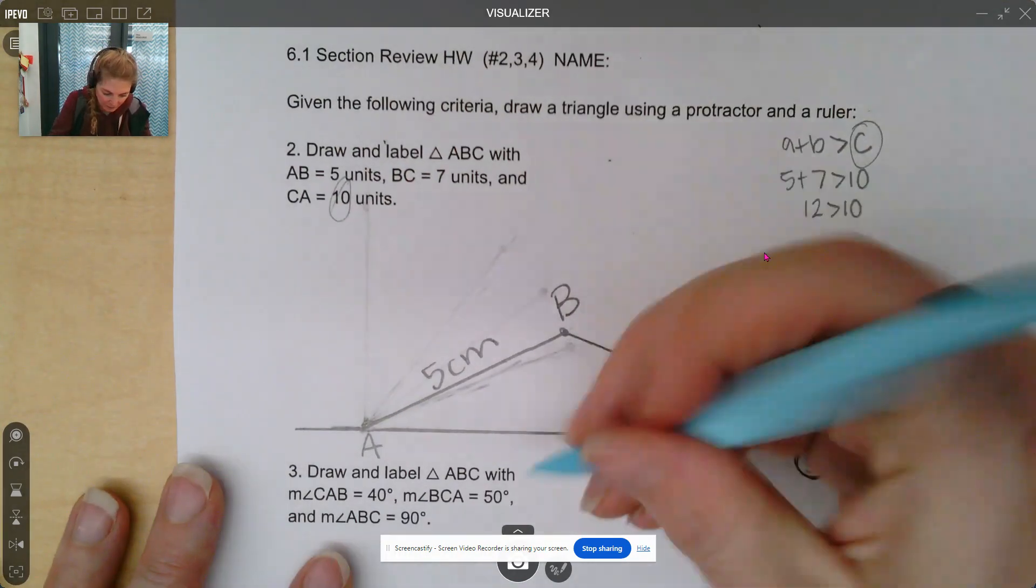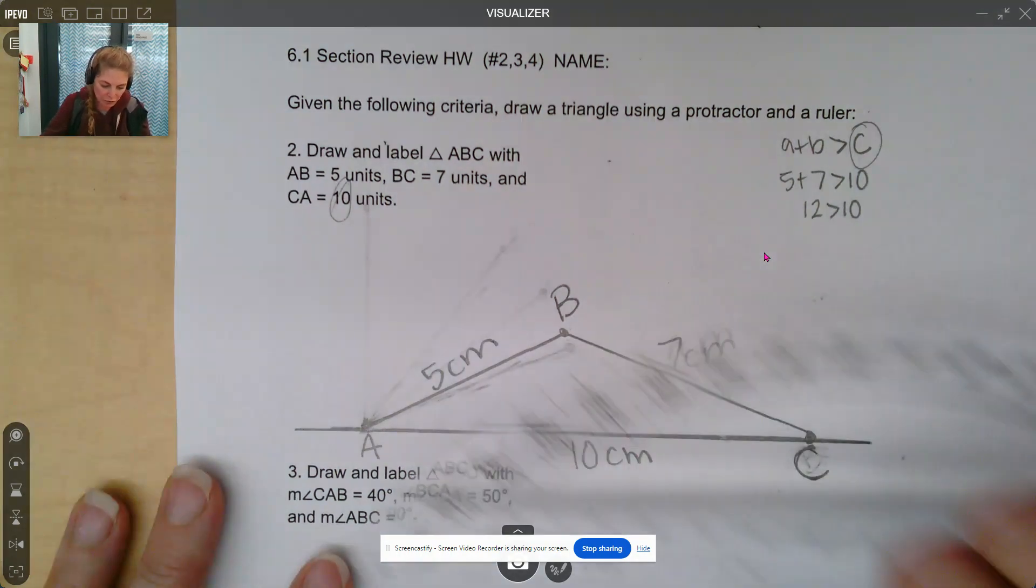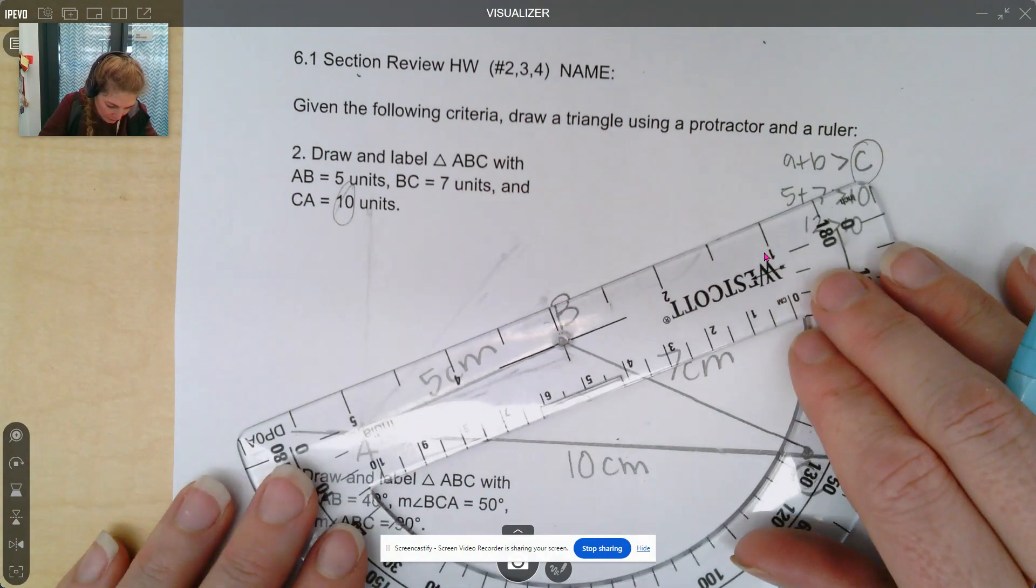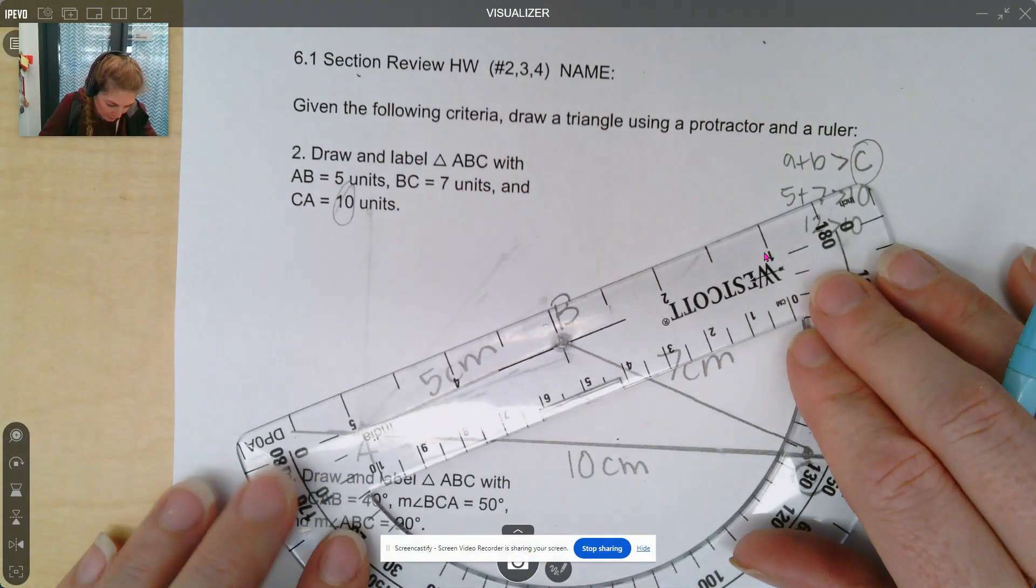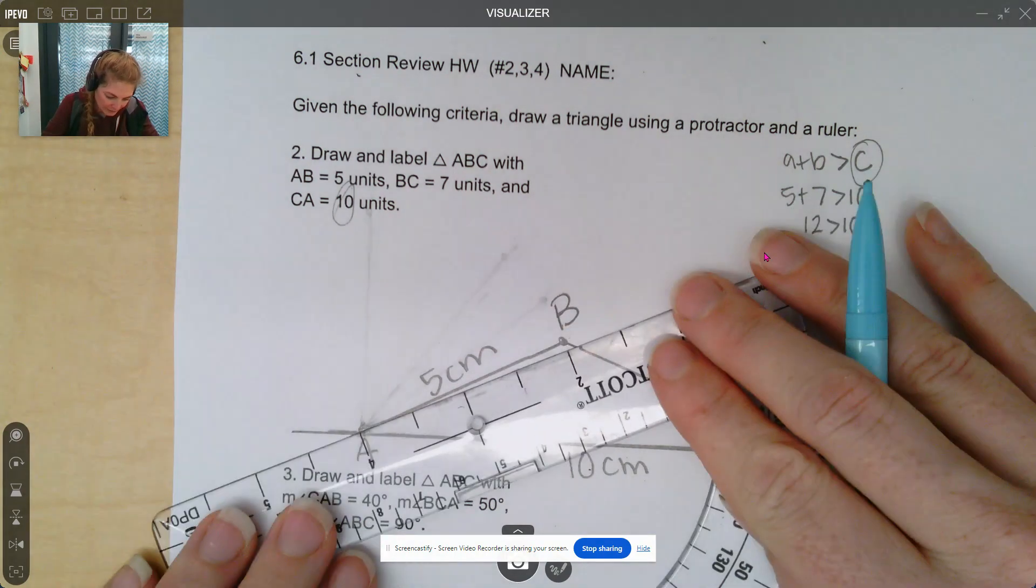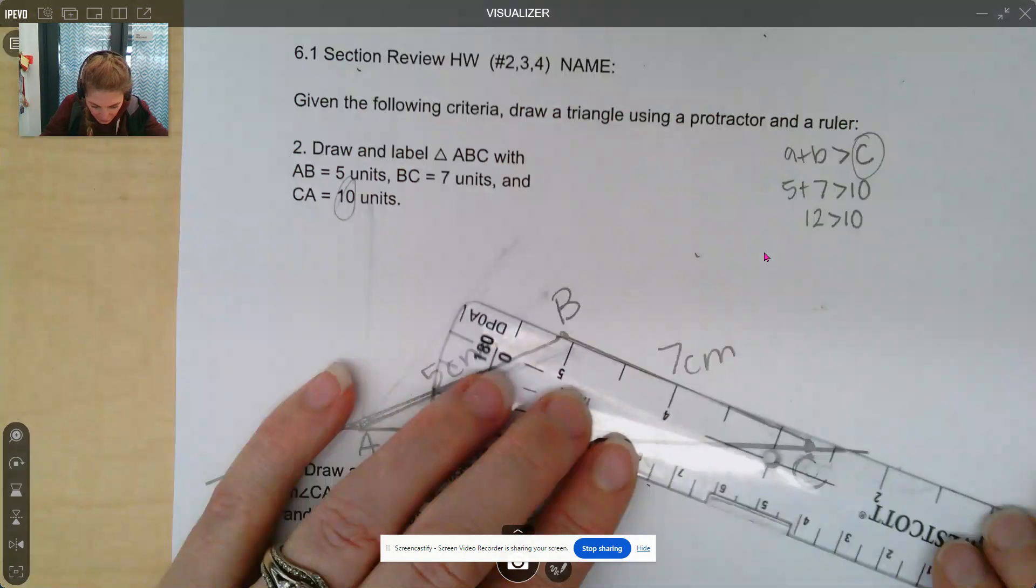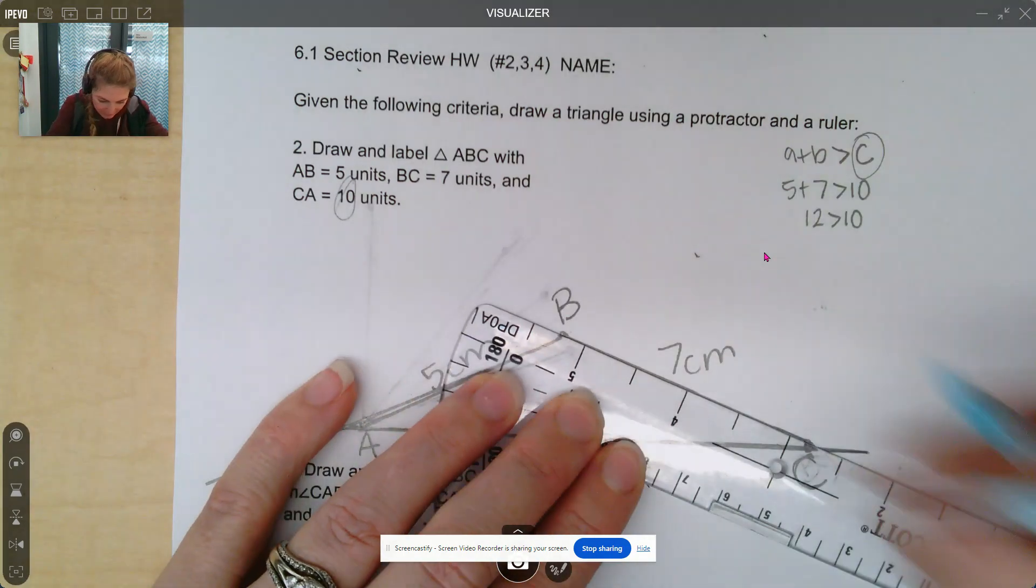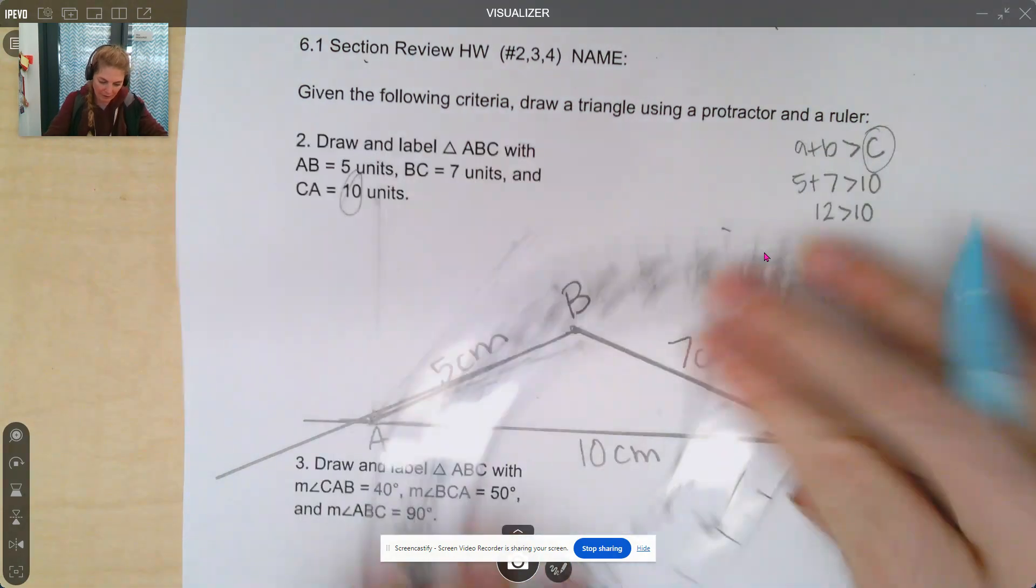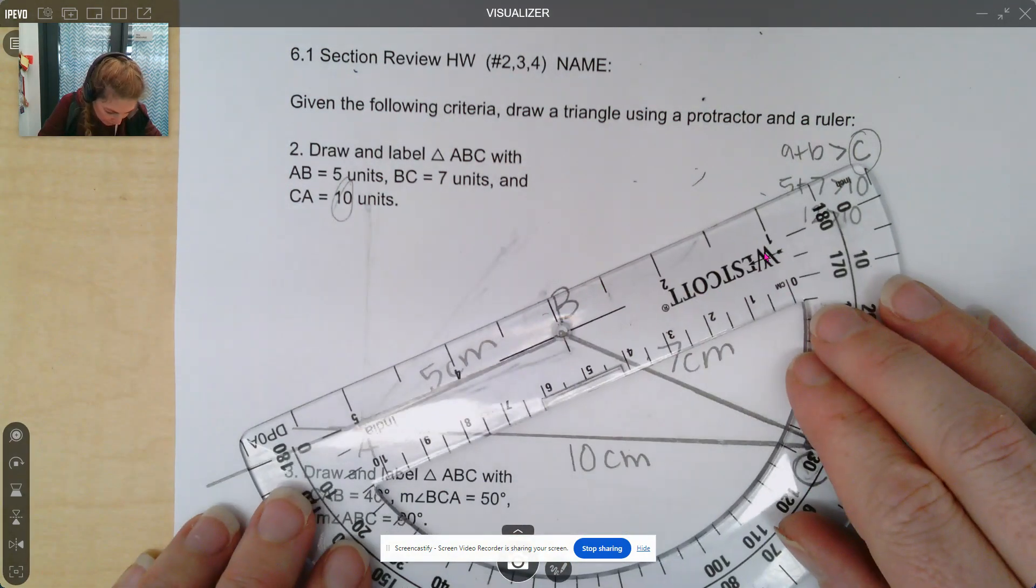So from here we, oh, forgot to label this, 10 centimeters. Probably want to label the angles as well. So I will line this up with zero. Probably need to extend out these lines so I can measure them more accurately. I know we took some extra time on this one, but rather do it right and take longer than do it wrong.